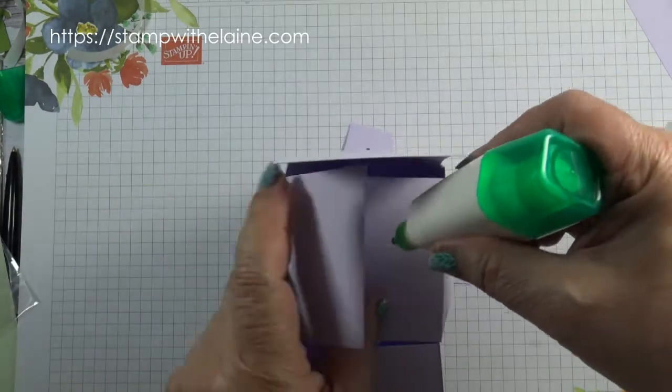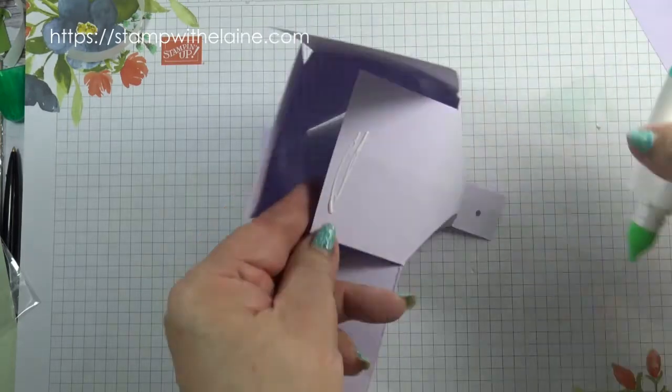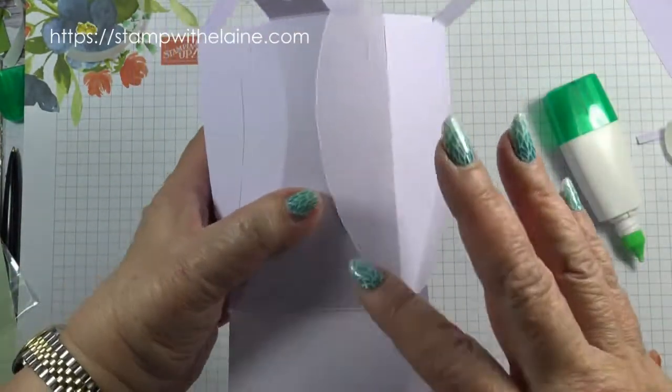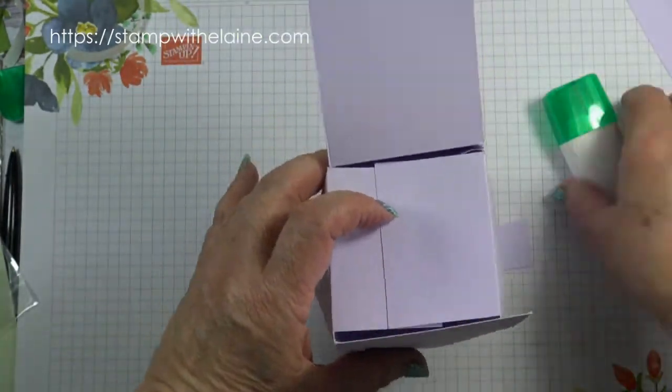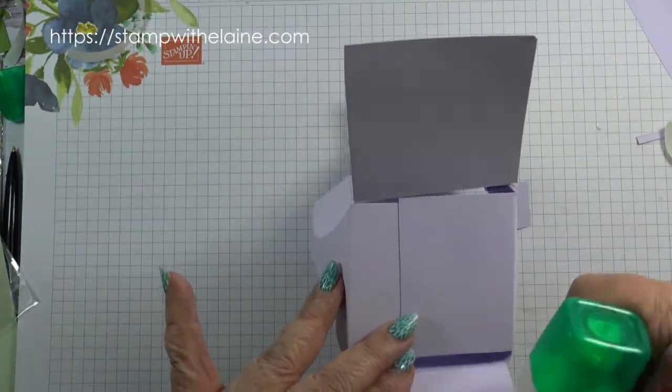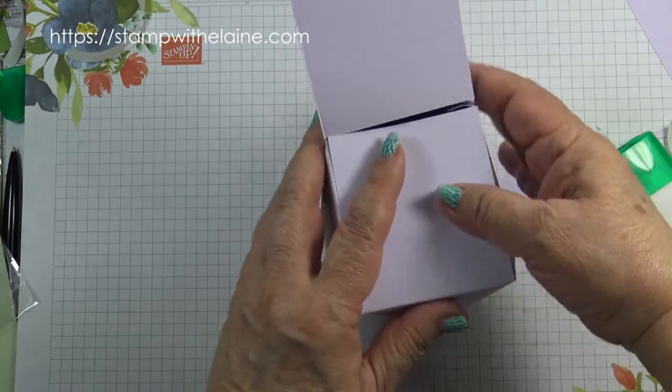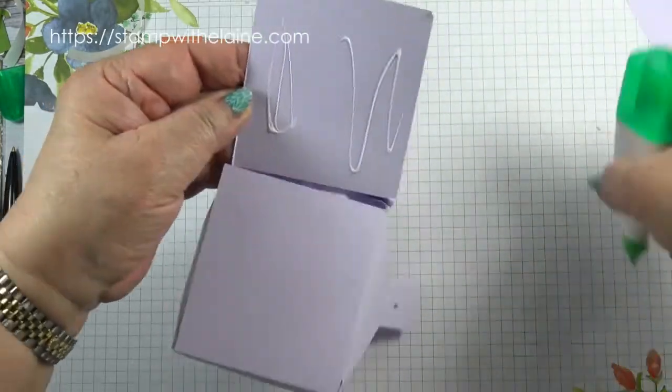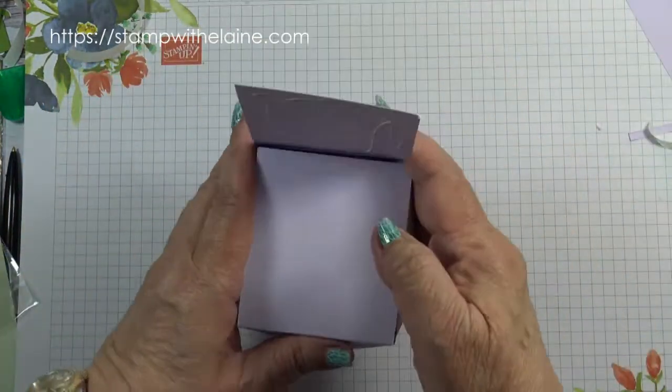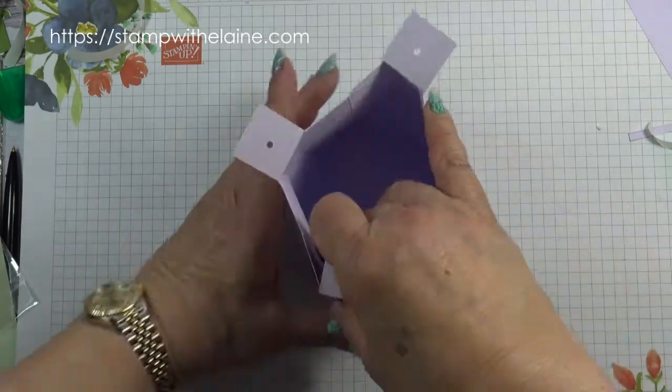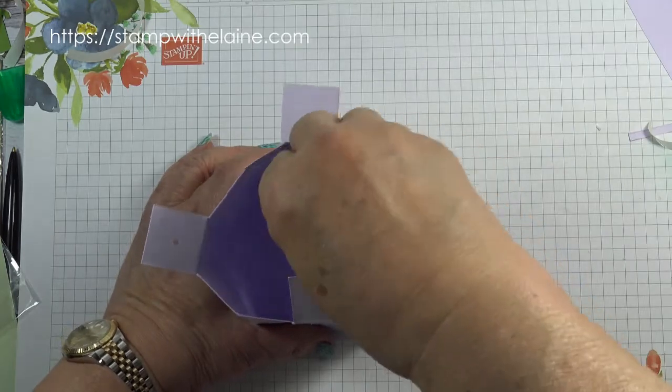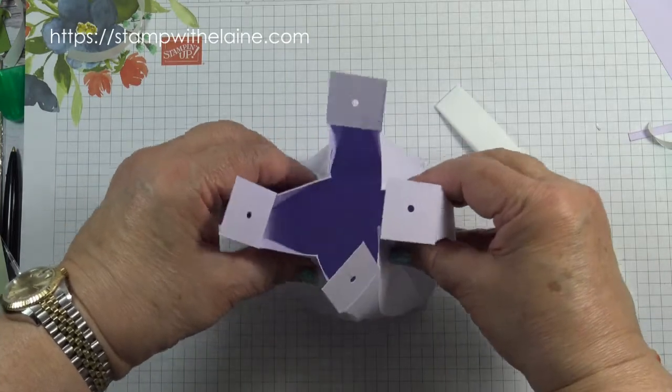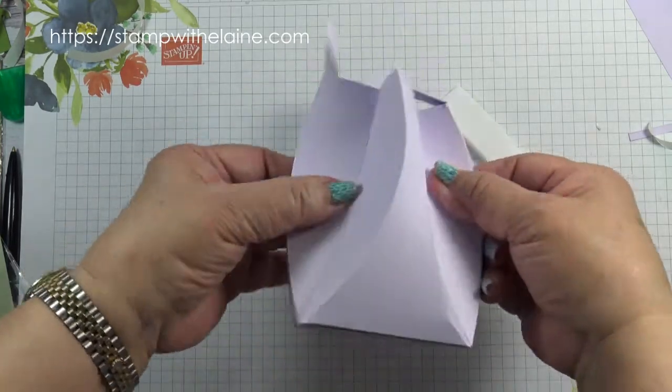Take your glue and glue that together. See where your back is. That's your back, so this is your front. This goes on last. Just press it in to make sure that's stuck. Take your bone folder and reinforce those bottom bits, then pinch it so it goes in like that and you can see it forming.